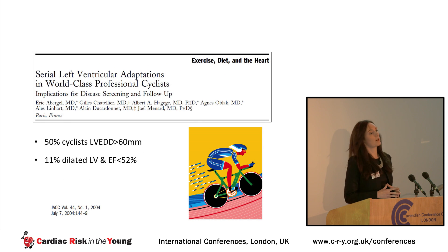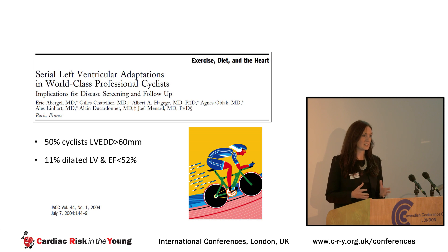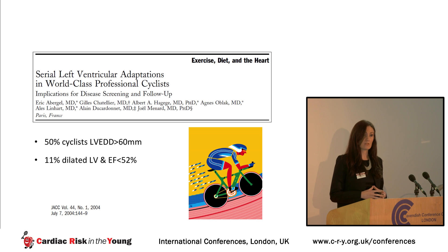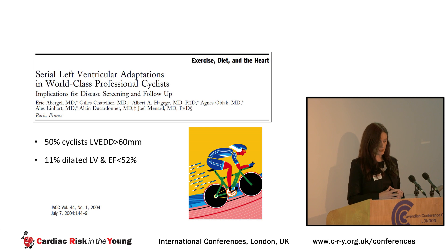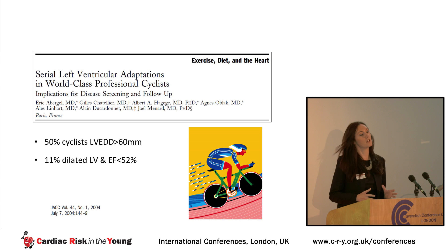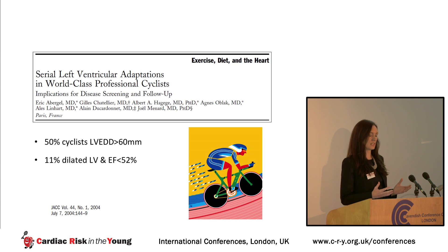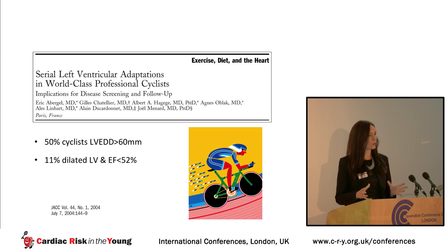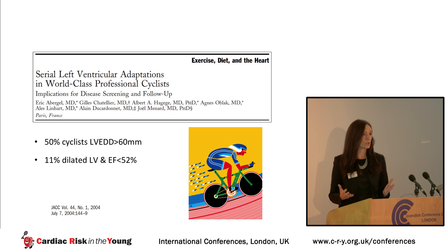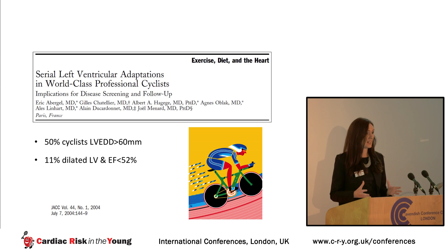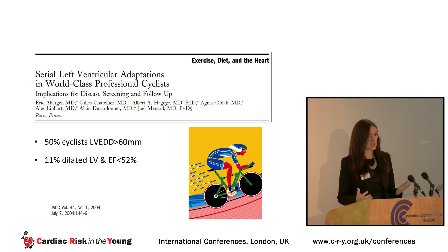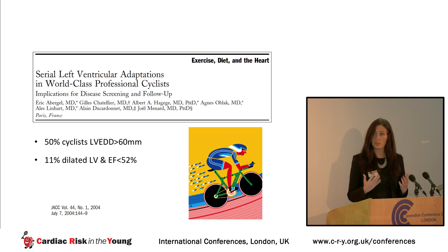A further study done by Eric Aberdell in Paris looked at 286 Tour de France cyclists and found that over half of them had dilated left ventricular cavity dimensions. More interestingly, 11 to 12% of them had not only left ventricular dilatation but also an ejection fraction in the mildly impaired or borderline range. Of course, you wouldn't be able to compete on a 21-day grand tour if you did in fact have a dilated cardiomyopathy, so we know this must be, in part, physiological adaptation.